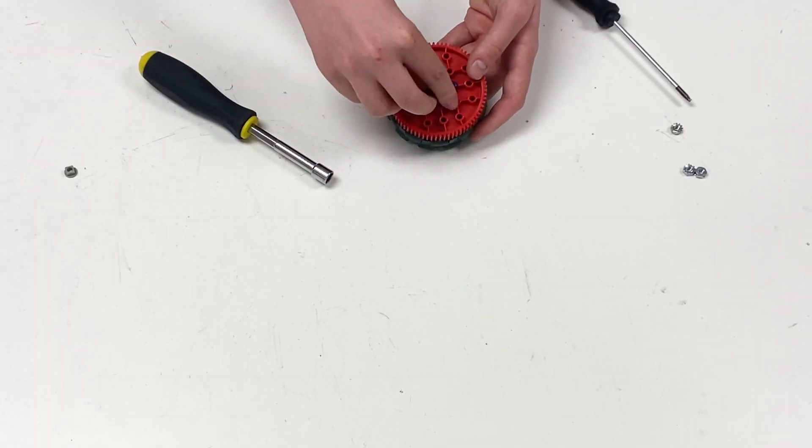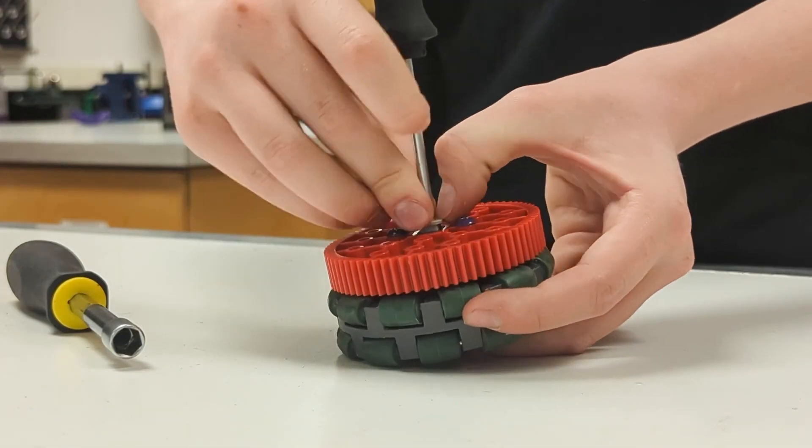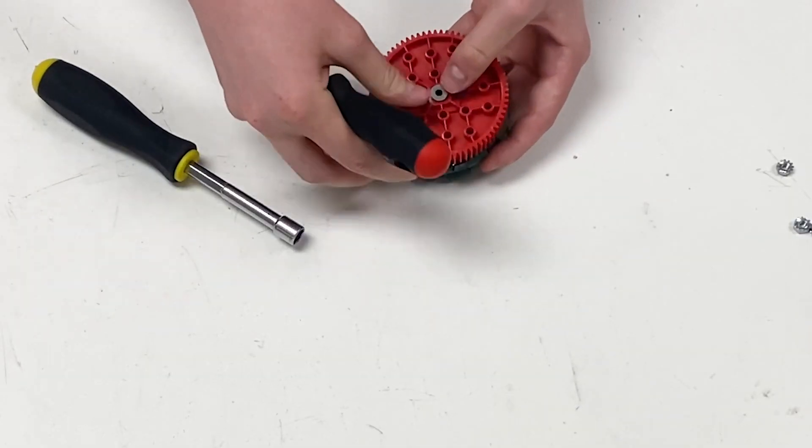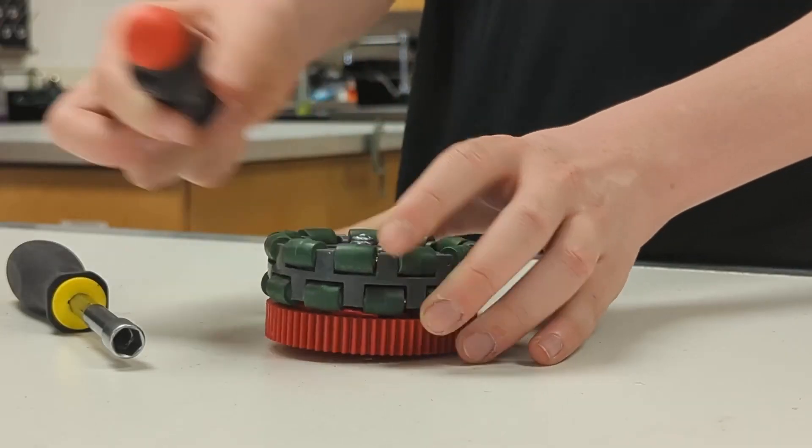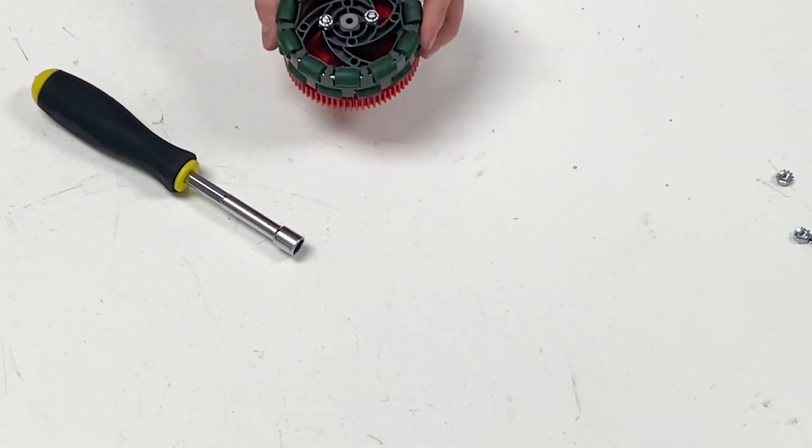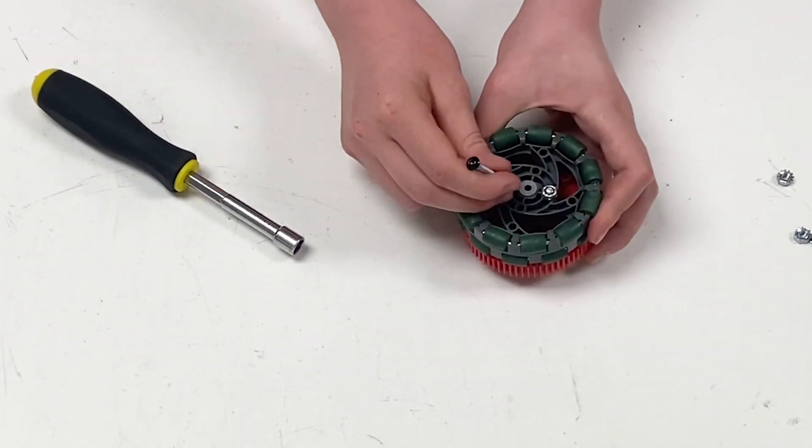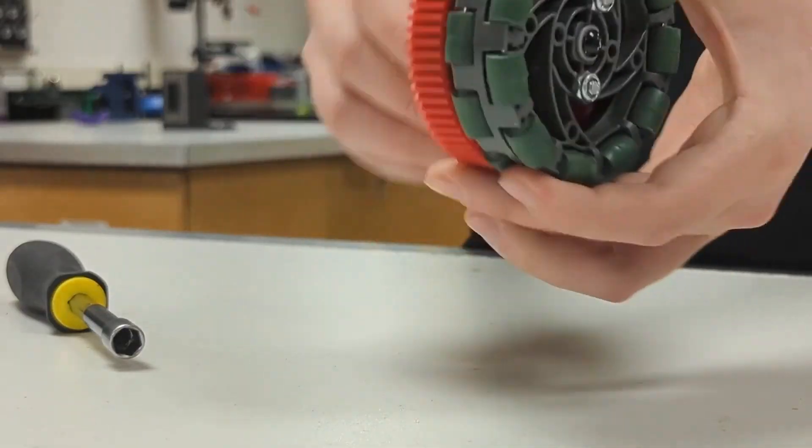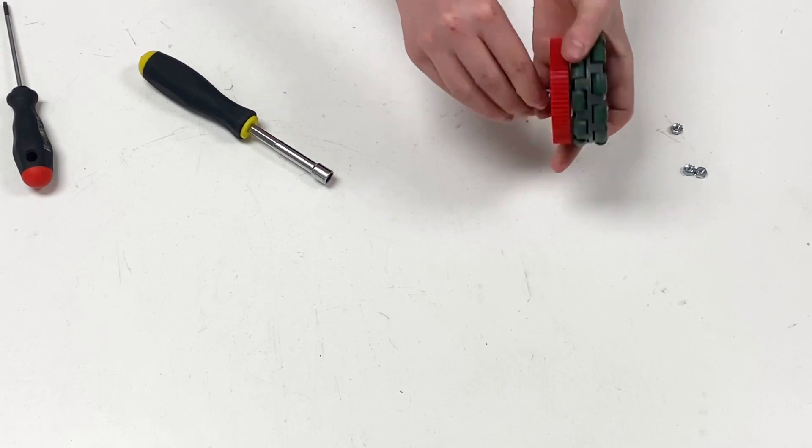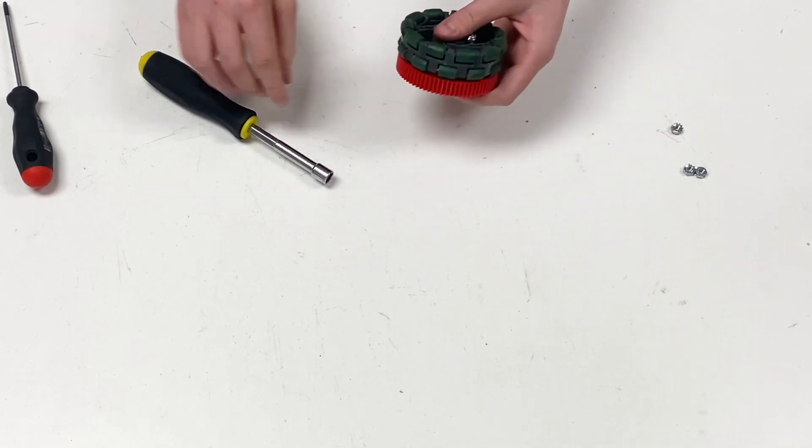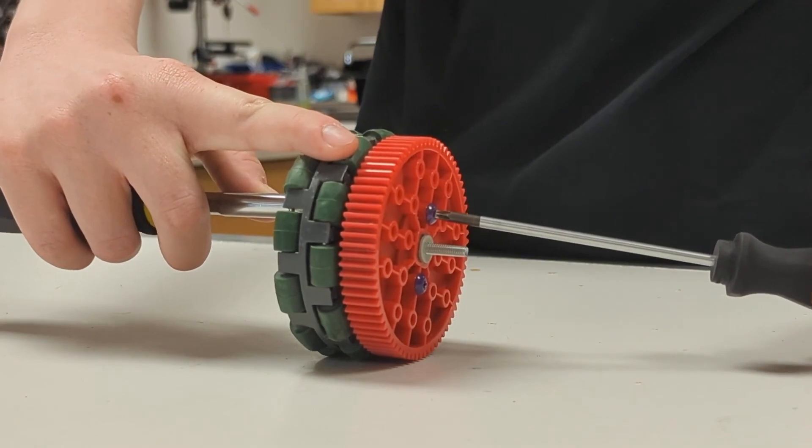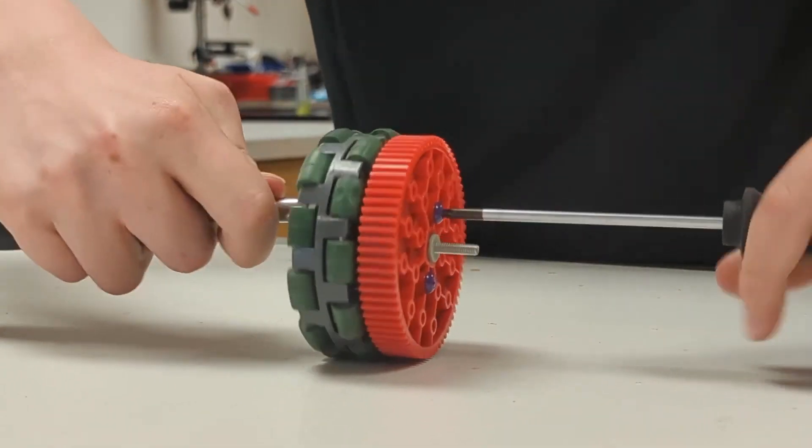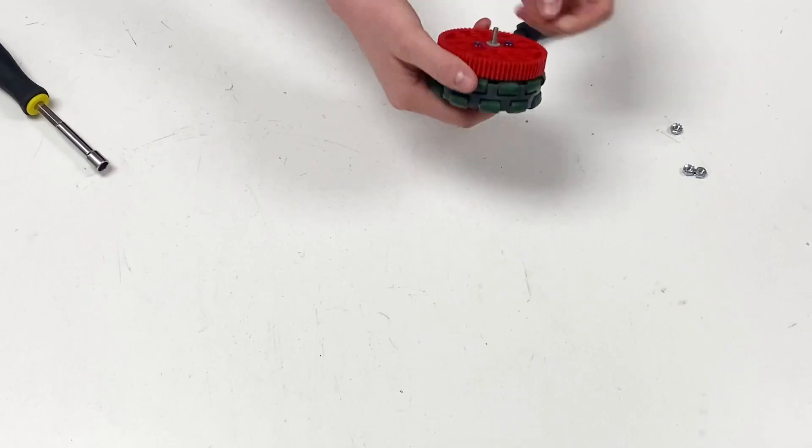Then we take a large screw, whatever size you want as long as it's above 1.5, you stick it through, it spins, and go back to tighten.